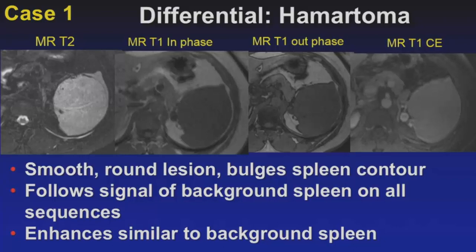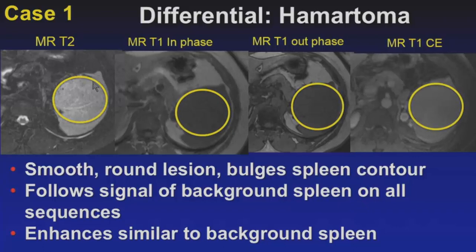The second differential item is a hamartoma. Just like anywhere in the body, a splenic hamartoma is a benign tumor composed of normal splenic elements in a disorganized fashion. On imaging — T2-weighted, T1 in-phase, out-of-phase, and post-contrast — the mass is smooth and round, with signal identical to the background spleen on pre-contrast images and almost identical enhancement on post-contrast images.